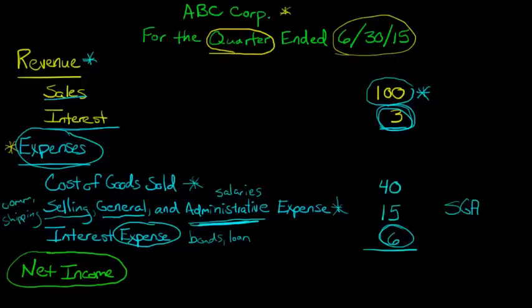Which in this case, we're going to take this 100 plus 3, that's 103, and then subtract out all these expenses. And I'm going to put them in parentheses. Sometimes things are put in parentheses, and it means you subtract these things. So we're going to subtract all this, and we're going to end up with a net income of 42.